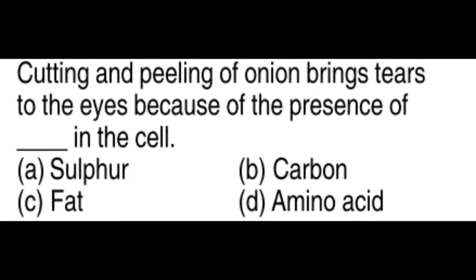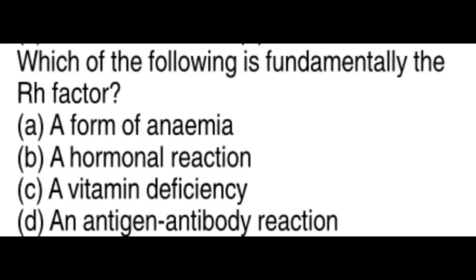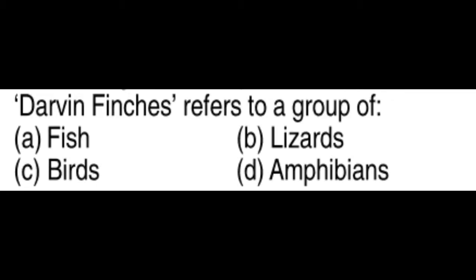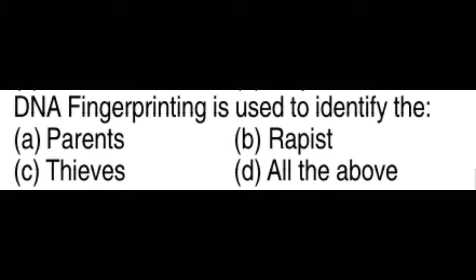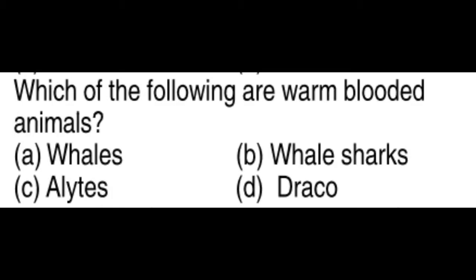Cutting and peeling of onion brings tears to eyes because of the presence of sulfur. The Rh factor is fundamentally an antigen-antibody reaction. Darwin's Finches refers to a group of birds. DNA fingerprinting is used to identify parents, rapists, and thieves. Warm-blooded animals include whales.